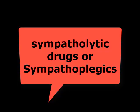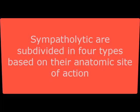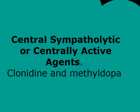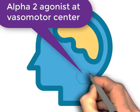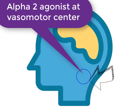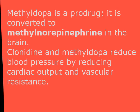The next category is sympatholytic drugs, or sympathoplegics, which interfere with sympathetic control of cardiovascular function, reducing cardiac output and total peripheral resistance. They are subdivided into four types based on anatomic site of action. Central sympatholytics — clonidine and methyldopa — are selective alpha-2 receptor agonists that decrease sympathetic outflow from the central vasomotor center through activation of alpha-2 adrenoceptors in the brainstem medulla. Methyldopa is a prodrug converted to methylnorepinephrine in the brain. Both reduce blood pressure by reducing cardiac output and vascular resistance.